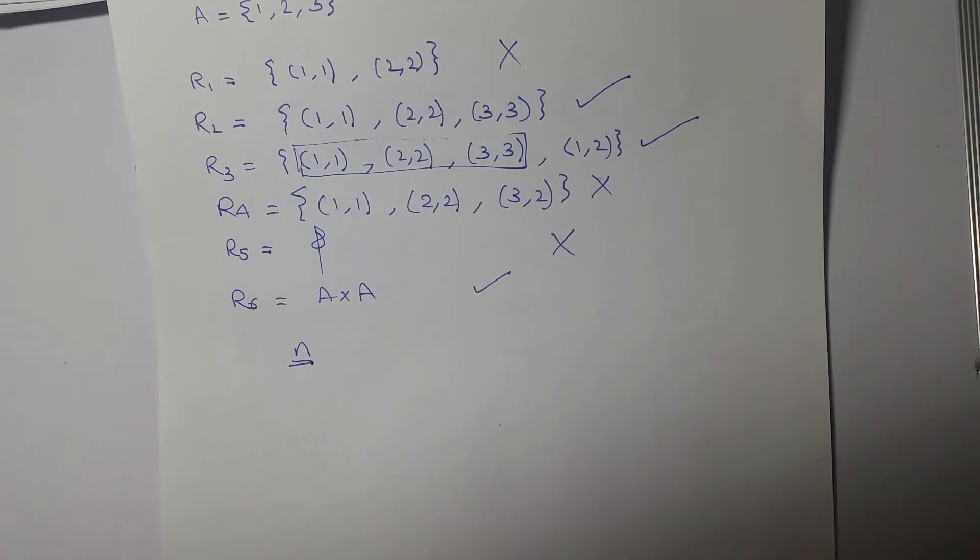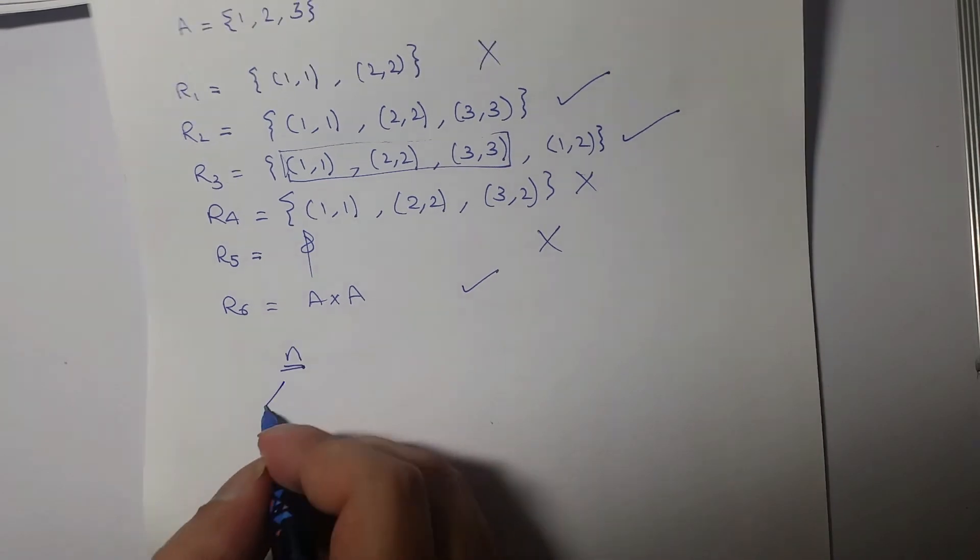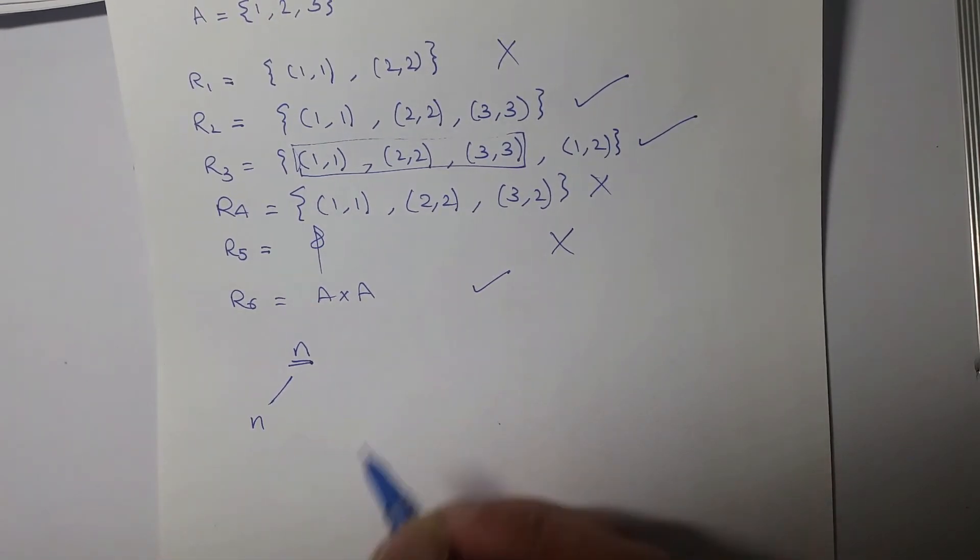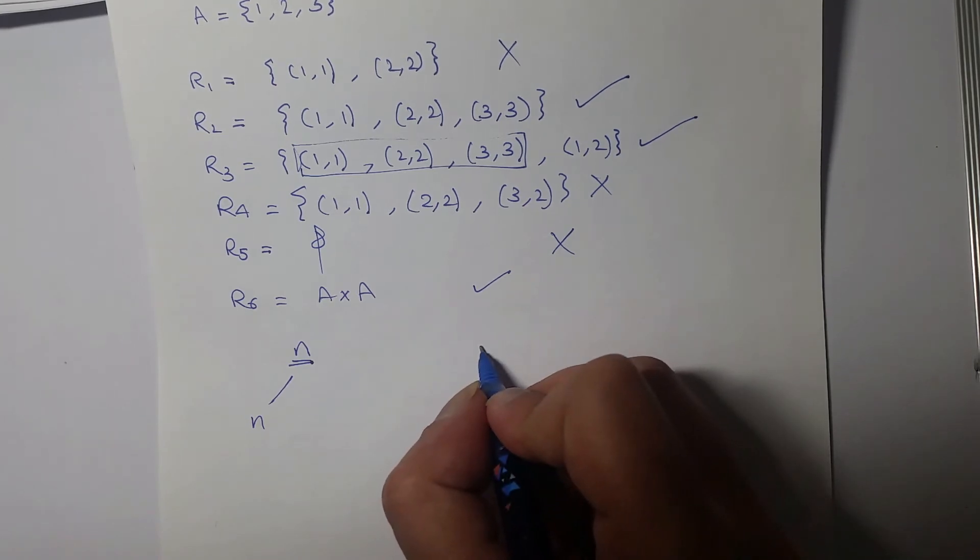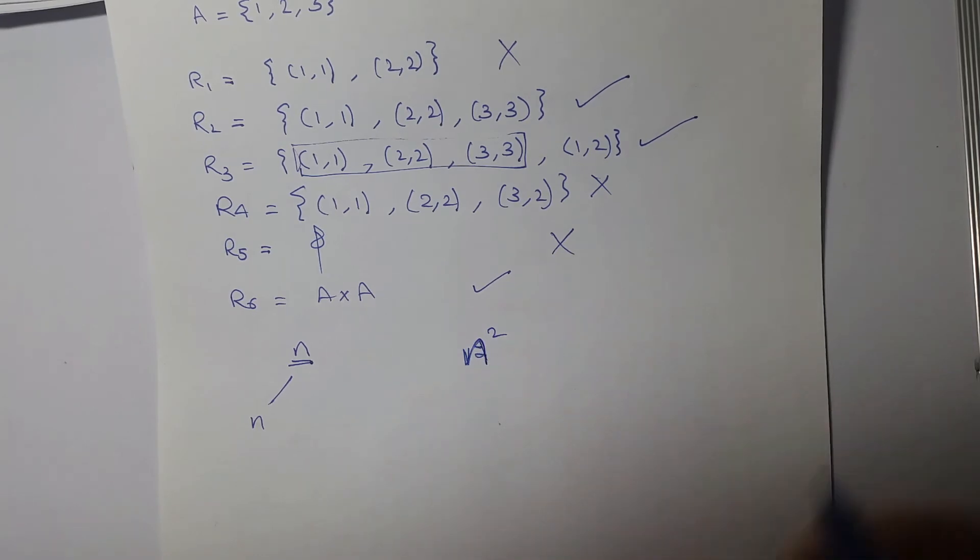So there are n ordered pairs of each element being related to themselves. And we know that the number of ordered pairs in a relation can be n squared.